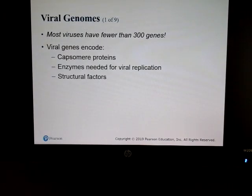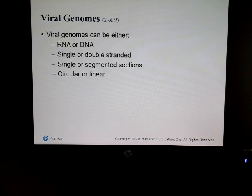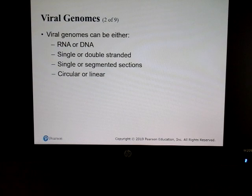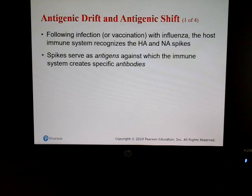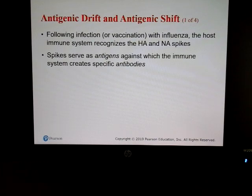Viruses don't have many genes — they have genes that encode the proteins, enzymes, and other structural factors they need. Their genome can be RNA or DNA, single or double-stranded, sometimes single or segmented, circular or linear. Two important things to know: viruses can undergo antigenic drift and antigenic shift, which is why you need a new flu shot each year.